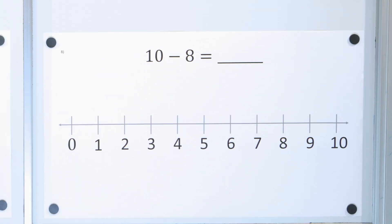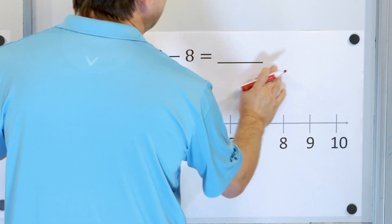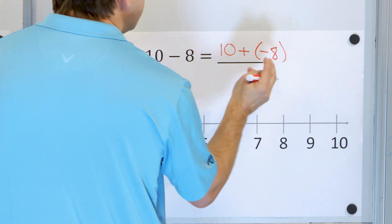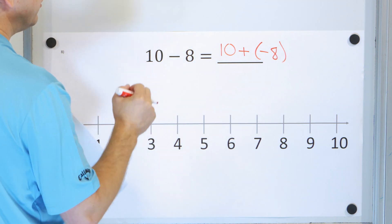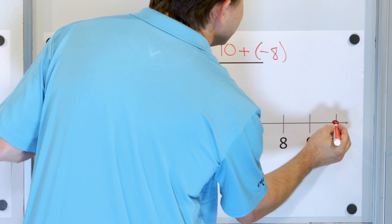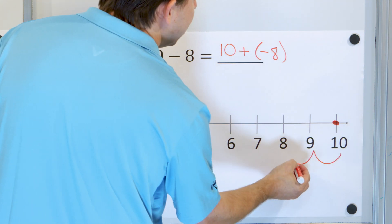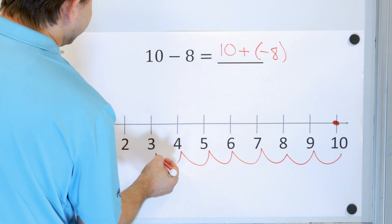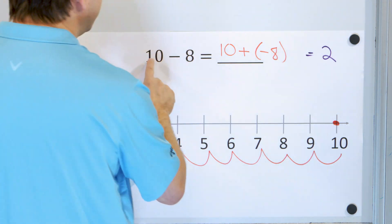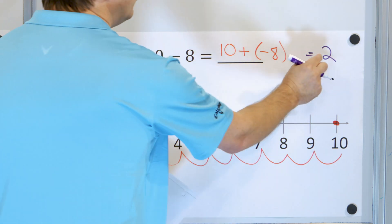Next problem: ten minus eight. Subtraction can always be thought of as adding the opposite sign or adding the inverse operation. So it can be thought of as ten plus negative eight — instead of ten going down by eight, you're thinking of it as ten going up by a debt of negative eight. Starting with ten dollars, normally adding means going to the right, but I'm adding debt I borrowed from someone else, so I must go to the left: one through eight units, and the answer is two. You already know ten minus eight is two, but ten plus negative eight can also be thought of as subtraction, which is also two.